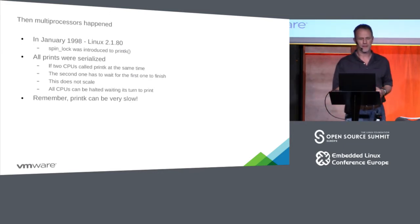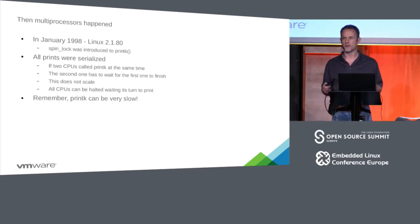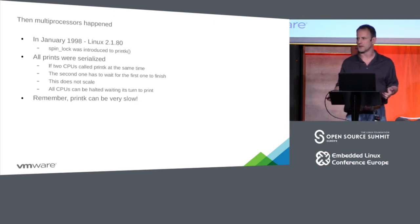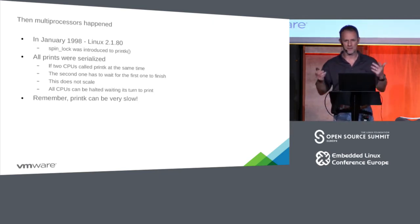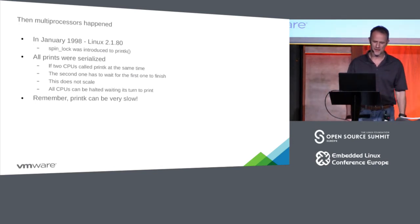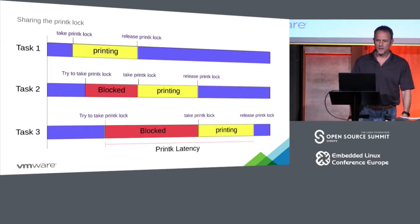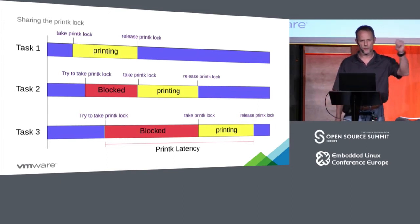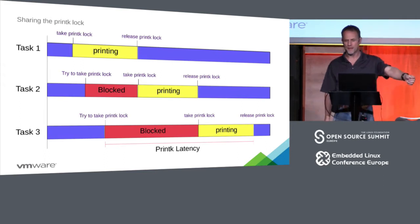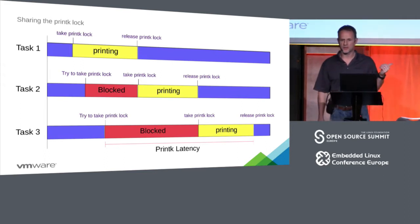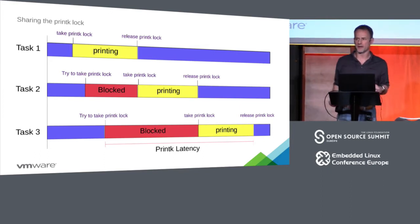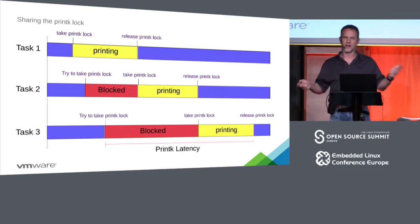But that doesn't scale. Printk can be very slow, especially going over a serial port — back then 9600 baud was common. So when you had three printks go off at the same time, the first one got the printk lock and printed; the second was blocked and had to wait; the third had to wait for both. This could get bigger and bigger depending on how many CPUs you have, which shows you why this doesn't scale.